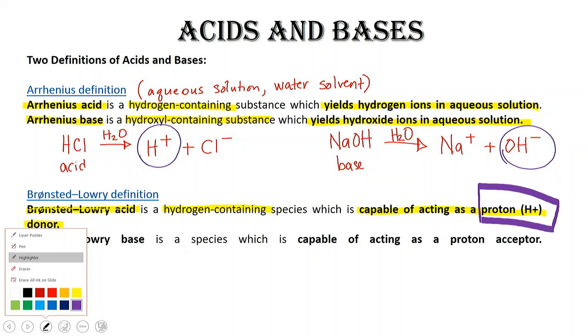A Bronsted-Lowry base is one that accepts those protons. So an acid donates protons, whereas a base is going to accept protons. Let's take a look at our Bronsted-Lowry acid and base.